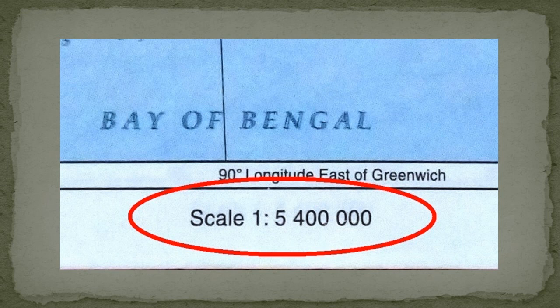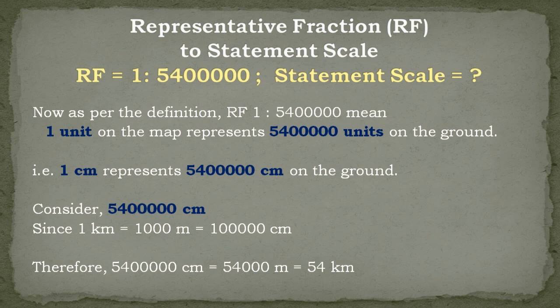Now let us see how to convert the RF into a statement scale. Take the example from the map I have shown you earlier. The scale was 1 is to 54 lakhs. As per the definition, the representative fraction of 1 is to 54 lakhs means a distance of 1 unit on the map will represent a distance of 54 lakh units on the ground. That means a distance of 1 centimeter on the map will represent a distance of 54 lakh centimeters on the ground.